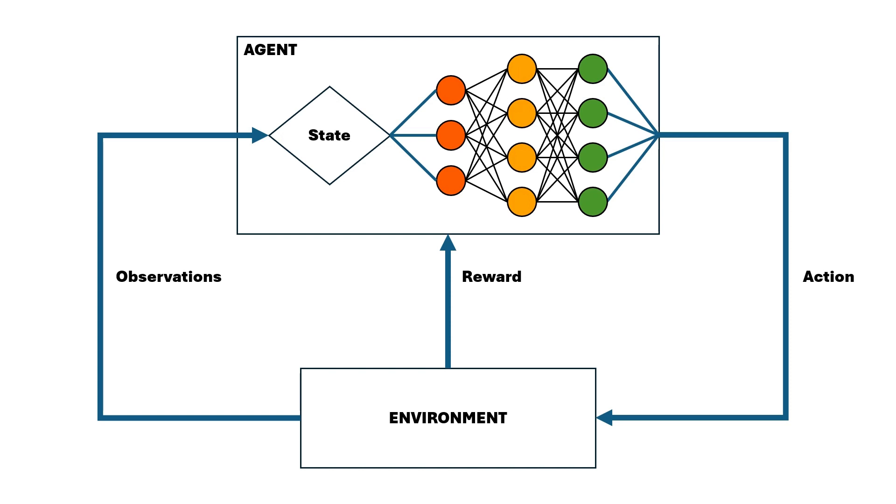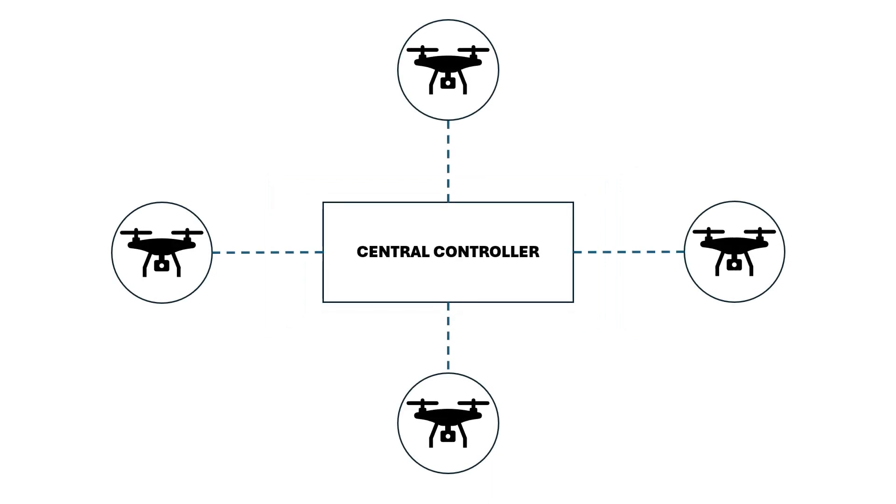In this project, the environment was the square map whose size the user could set. Our simulation used a centralized topology for the agent, a central controller that could control the drones, direct them where to go, share their observations, and remember where they had traveled.